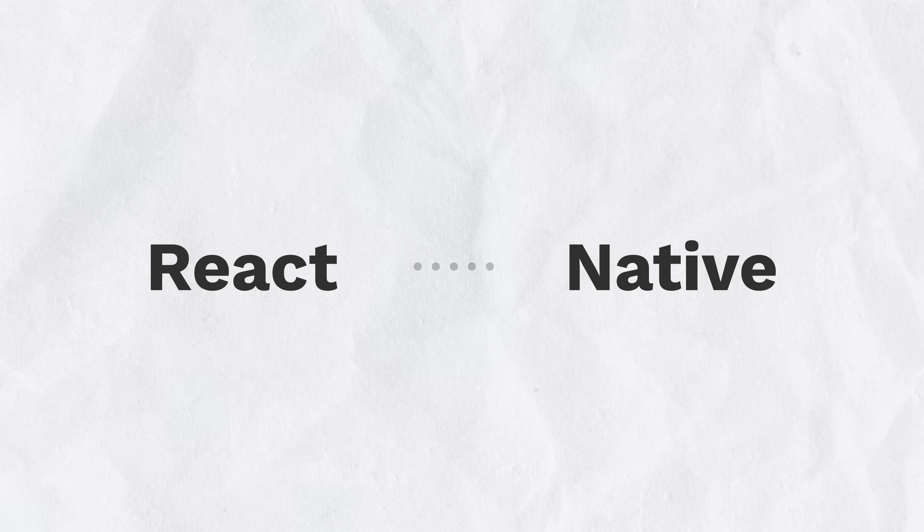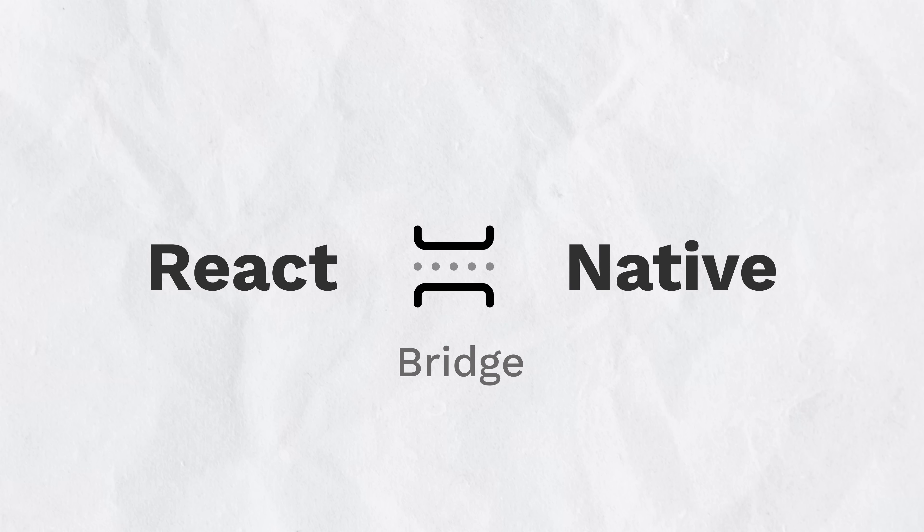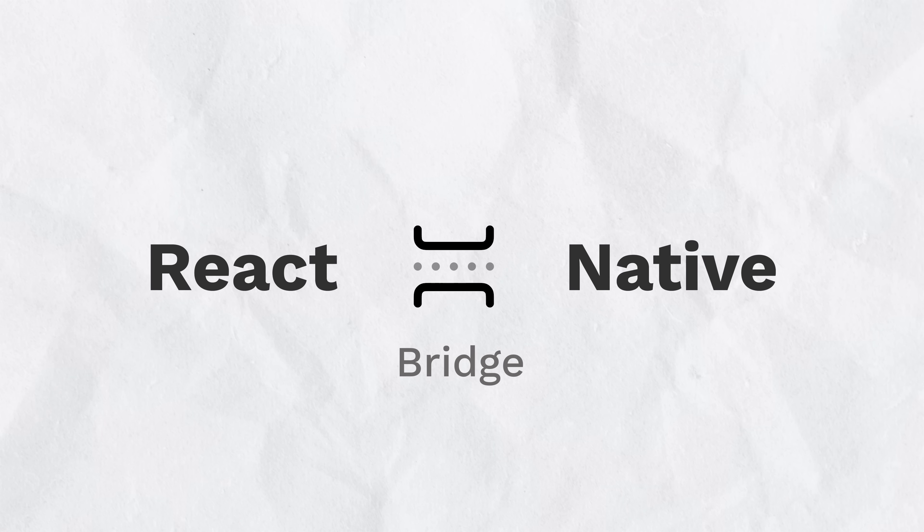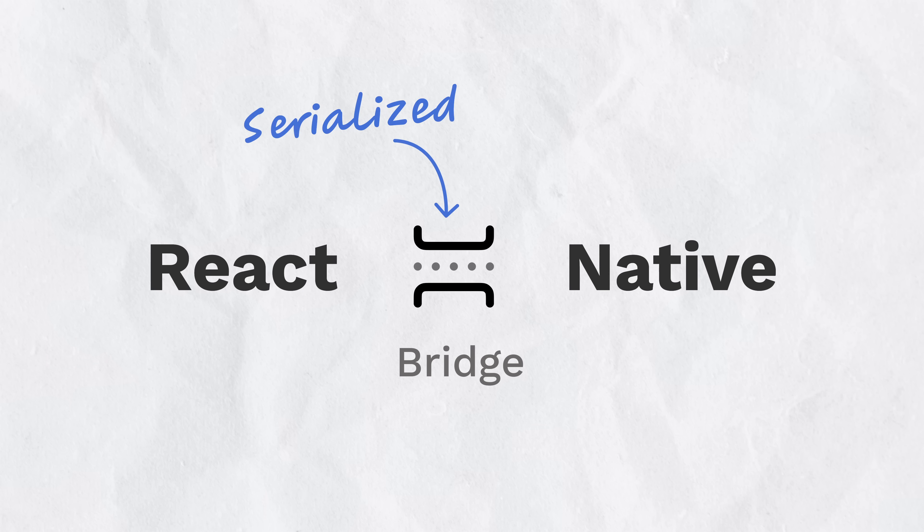The way React Native works is that it communicates with the native platform over a bridge. When it sends a request to render a UI view or respond to a user's action, that message is serialized and sent over that bridge asynchronously. This caused some performance issues. One that I ran into personally was trying to write a rich text editor in an app — when I was typing quickly, the interactions wouldn't be instant.